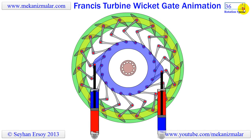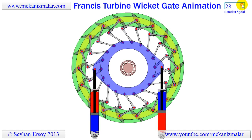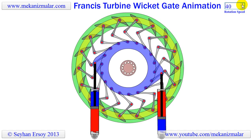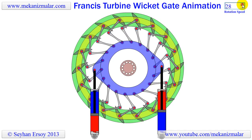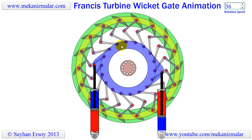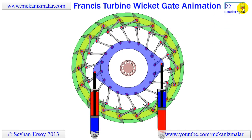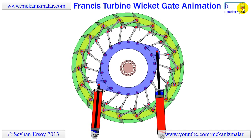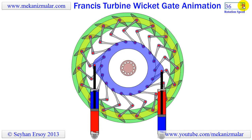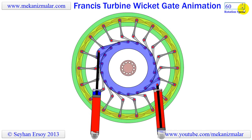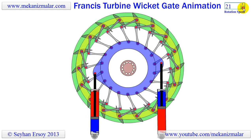Notice how the color pair is shifting when the rotation direction of the center disk changes. You should also notice the clever way this rotation of the center disk is transferred with the linkage pair to the wicket gates. The combined effect is that the simple push and pull action of two hydraulic cylinders opens or closes all the wicket gates.